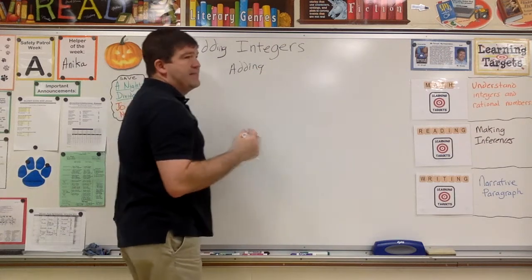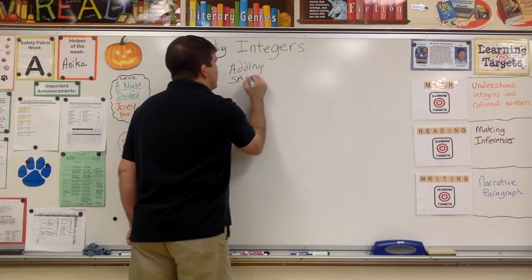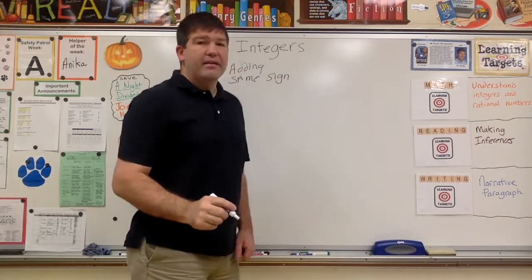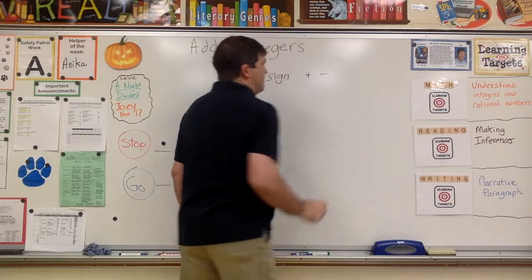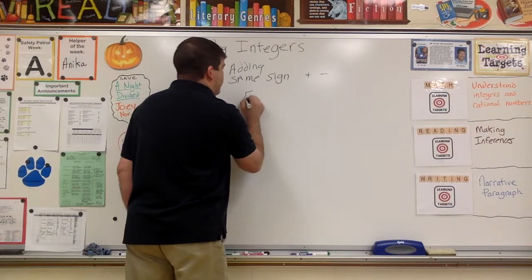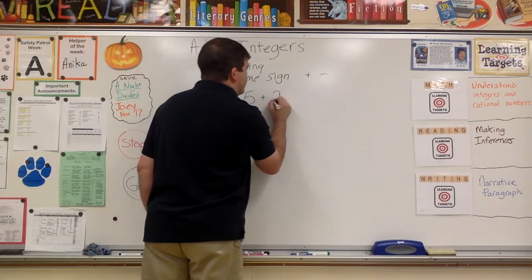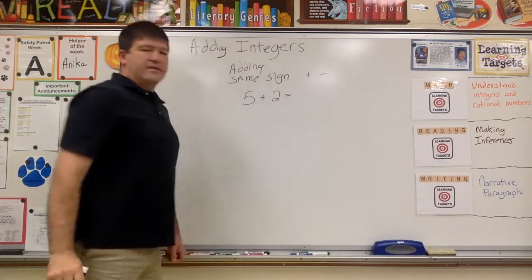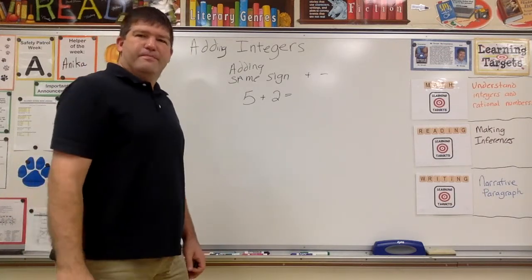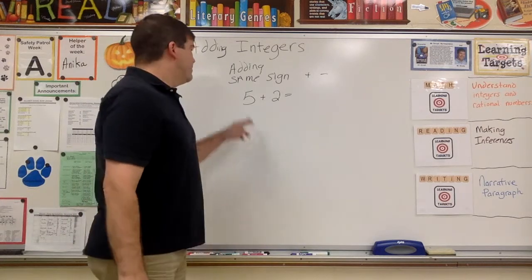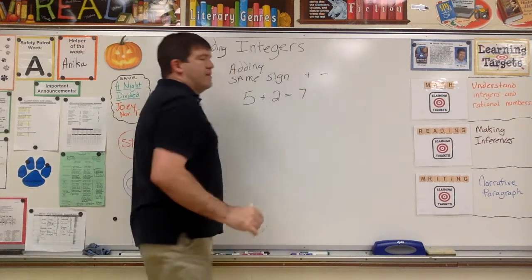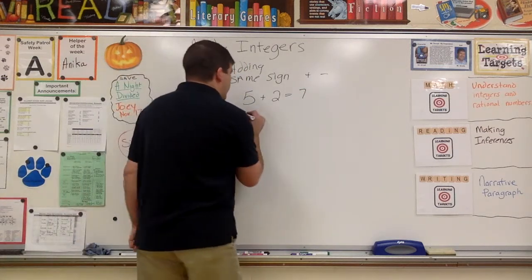For adding, if they both have the same sign — and by sign I mean either positive or negative — you just add them. For example, five plus two equals seven. You're adding two positive numbers; we've done this since kindergarten, so you just add them and the two positives give you a positive seven.